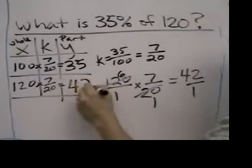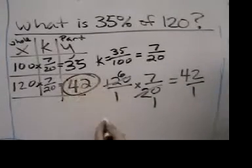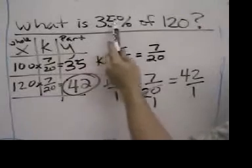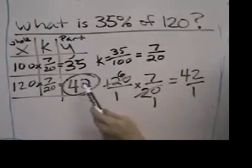So the mystery value is 42. What is 35 percent of 120? 42.